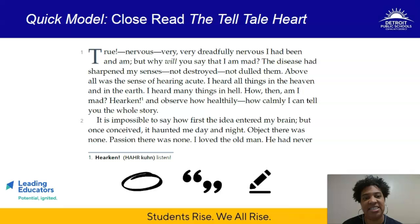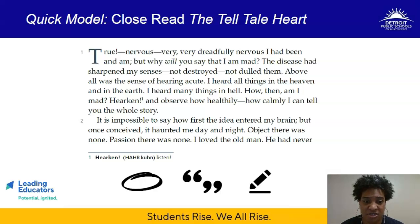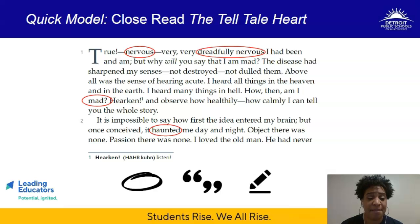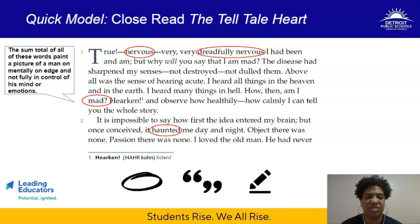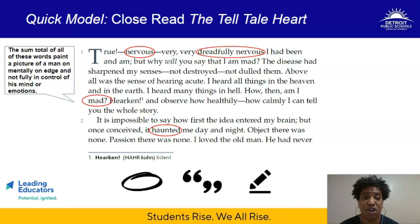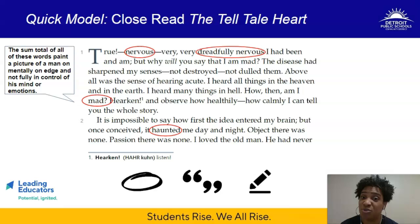I want to draw your attention to several words I've circled: nervous, dreadfully nervous, mad, and haunted. The reason I've circled these words is because when they come together, the sum total paints a picture of a man mentally on edge and not fully in control of his mind or emotions. We're circling descriptive words or phrases, and all of these are very descriptive. Mad in this sense doesn't mean angry — it actually means crazy. And this idea of being haunted, compacted in this paragraph, leaves me with a very distinct impression. It's definitely descriptive and worthy of circling.